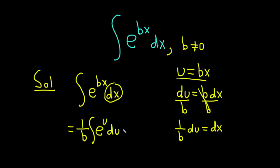When you integrate e to the u, you just get e to the u. So this is 1 over b, e to the u, plus c.